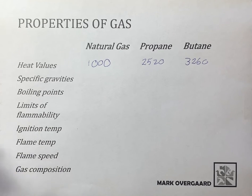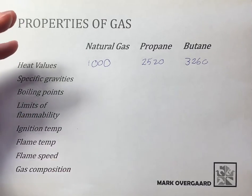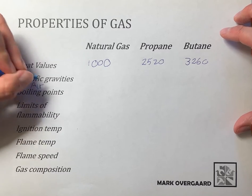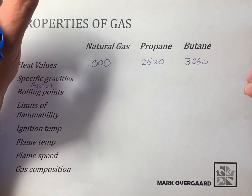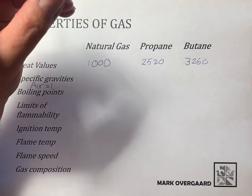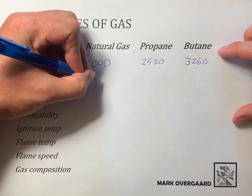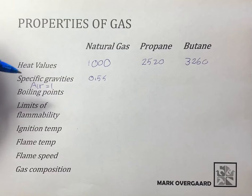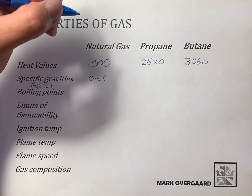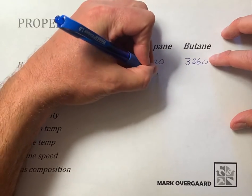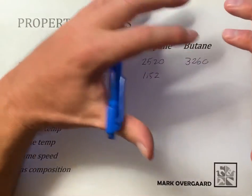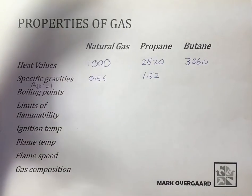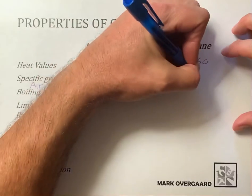Next, specific gravity — we're dealing with the vapor state here. Air is our starting point, and air equals one. If a gas is lighter than air, it has a specific gravity, or relative density, of less than one. For natural gas it's 0.55, which indicates it's lighter than air. Propane vapor is heavier than air at 1.52, meaning if propane escapes it will congregate on the floor or below the air, which can cause a lot of safety problems — there are code clauses that relate to that. Butane is even heavier at 2.